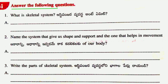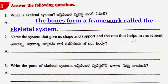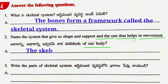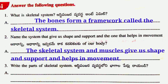Answer the following questions. First question: What is skeletal system? Answer: The bones form a framework called the skeletal system. Second question: Name the system that gives us shape and support and the one that helps in movement of our body. Answer: The skeletal system and muscles give us shape and support and help in movement.